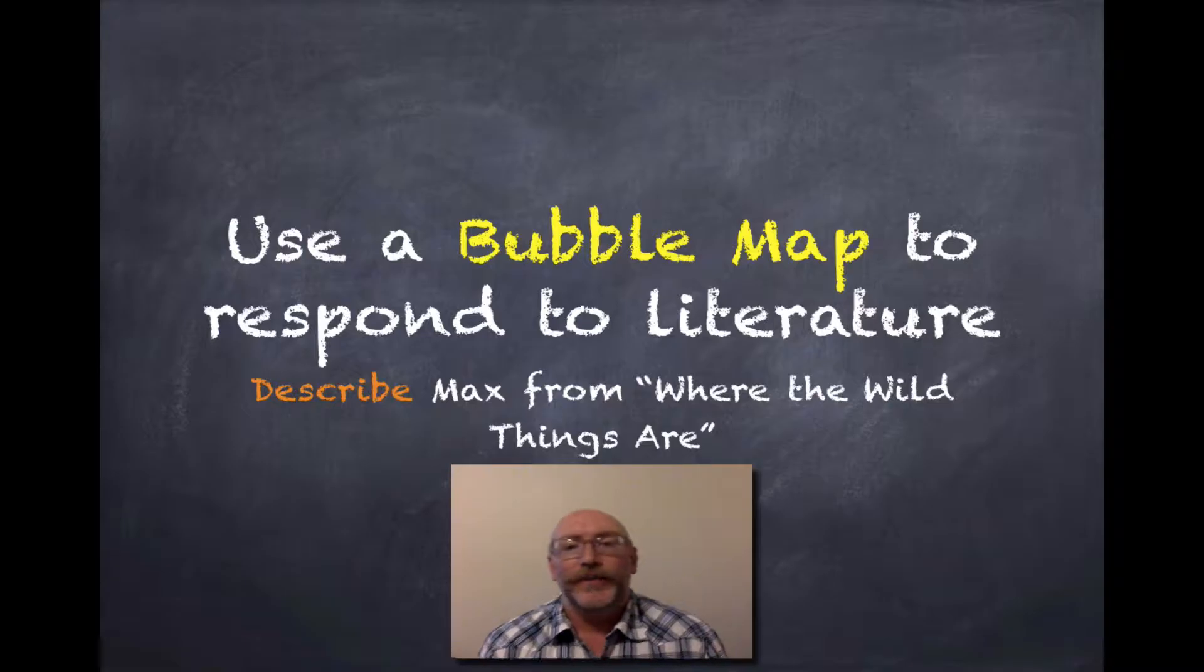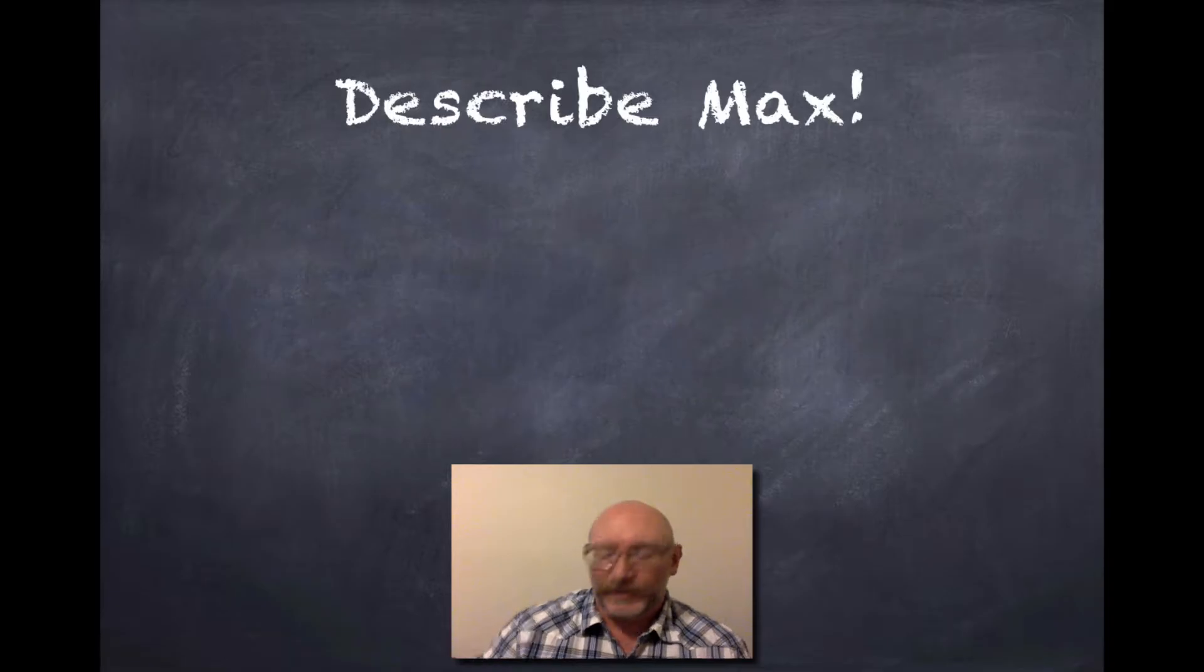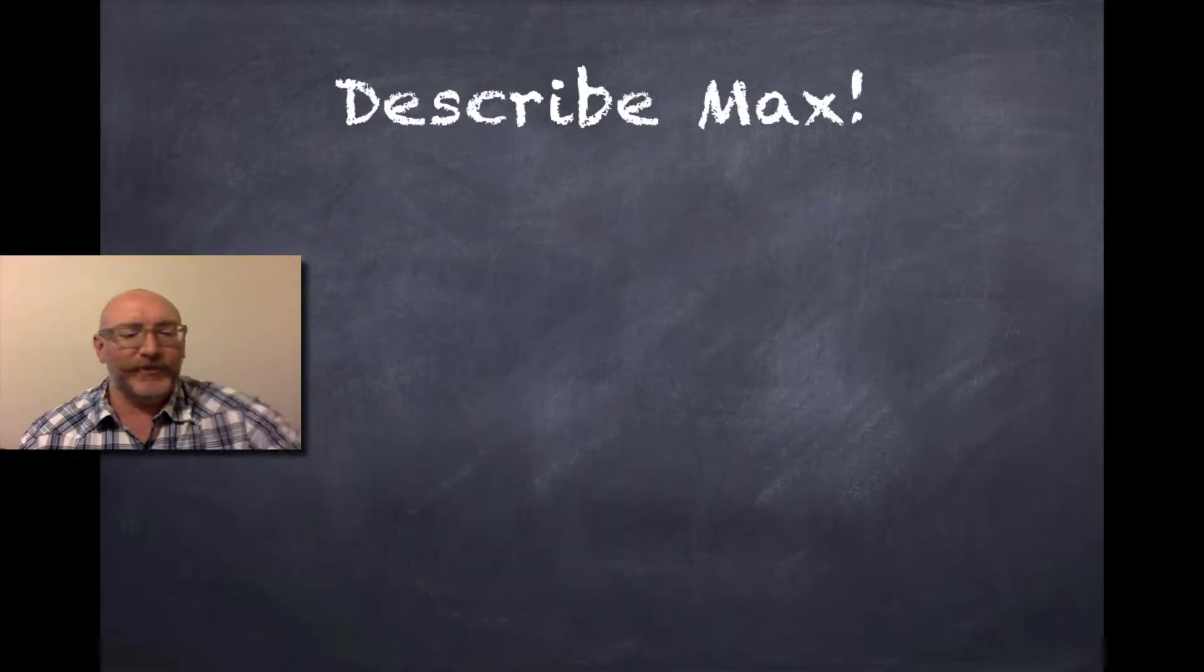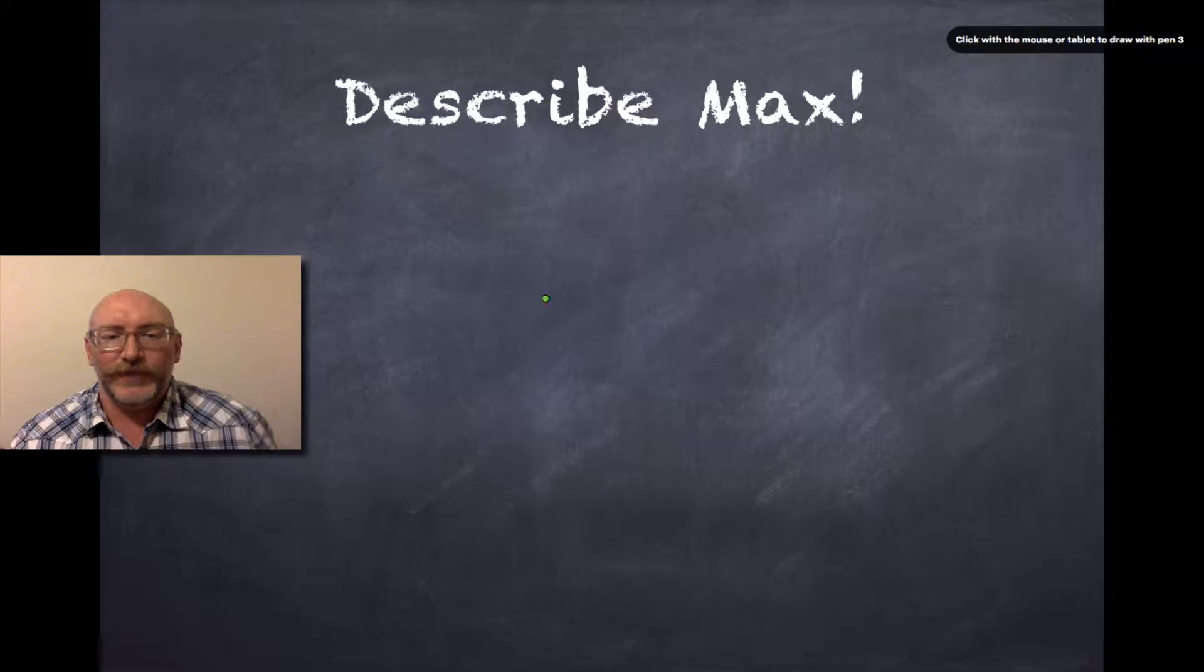Hey kids, so you made a bubble map that described somebody in your family. Now we're going to make a new one that responds to literature and describes Max from Where the Wild Things Are. Now we just read this this morning, so we should be able to come up with a bubble map for him without too much trouble.